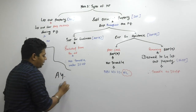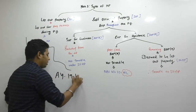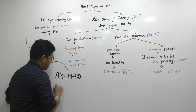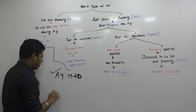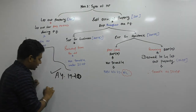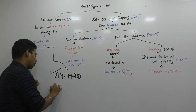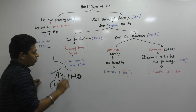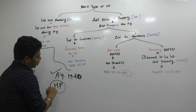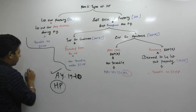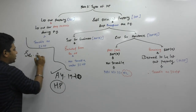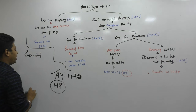AY 1920 discussion is done. Next discussion is house property. What is the charging section of house property? Come on, tell me the charging section of house property — it is Section 22.